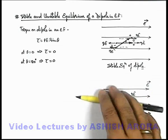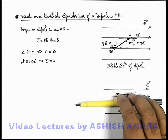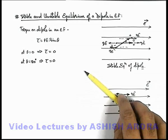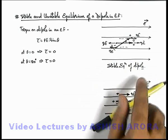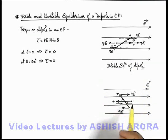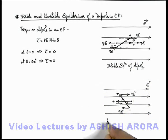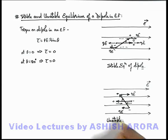That means if the dipole is slightly tilted, it will have a further tendency to move away from the equilibrium position. So this is the situation of unstable equilibrium of the dipole.